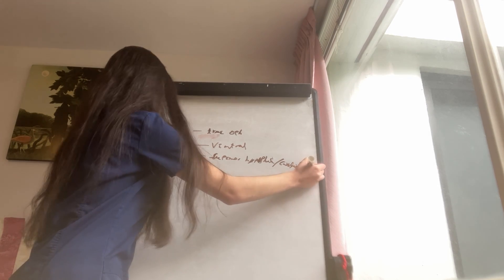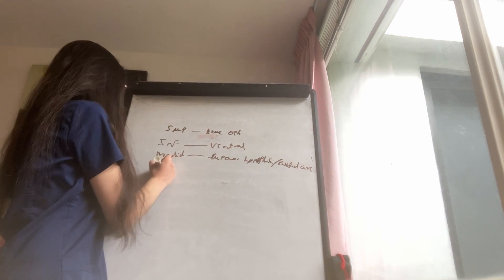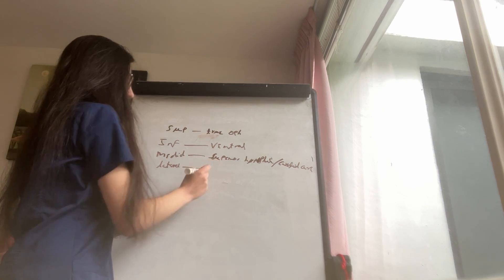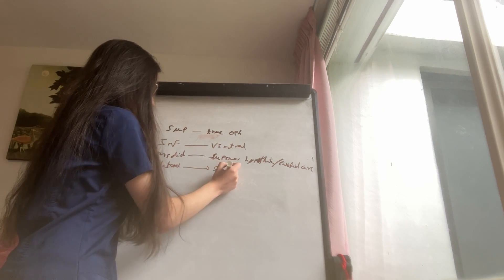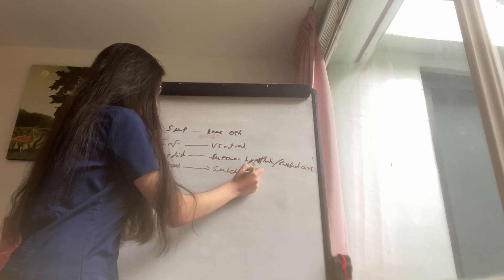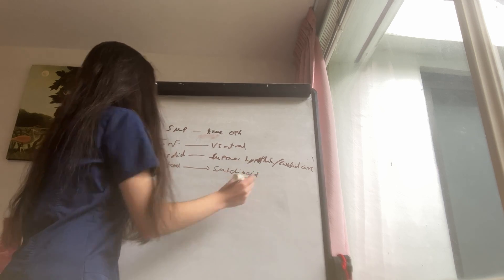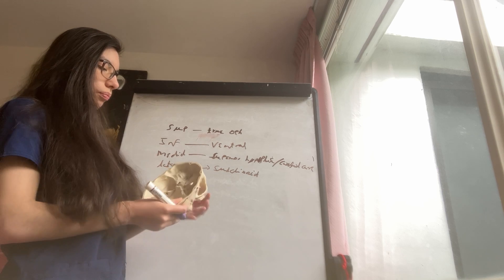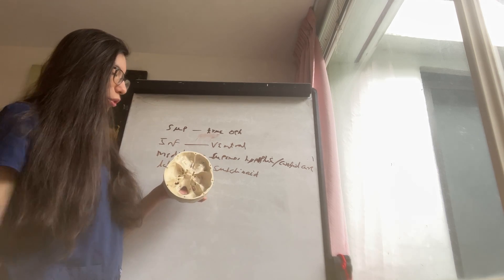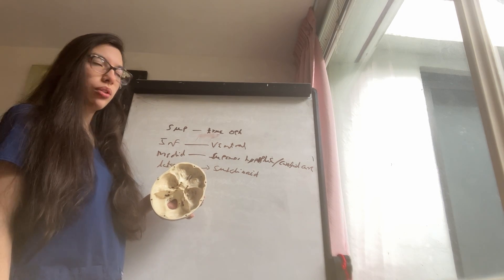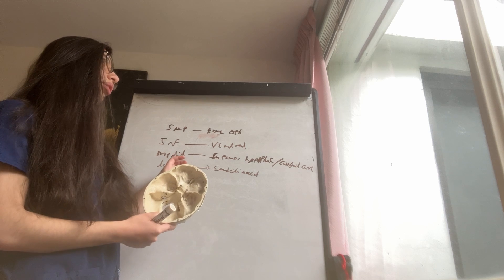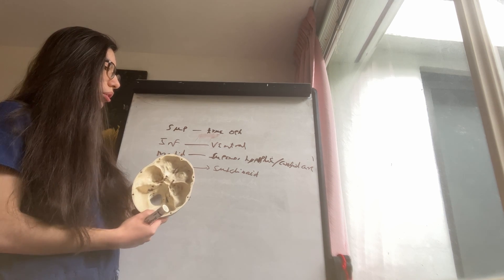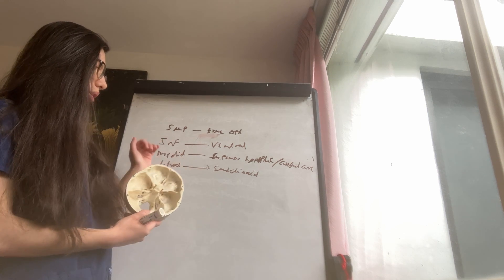The fourth is the lateral paraclinoid aneurysm, or subclinoid aneurysm. These paraclinoid aneurysms arise near the clinoid processes and in the cavernous segment of the carotid artery.